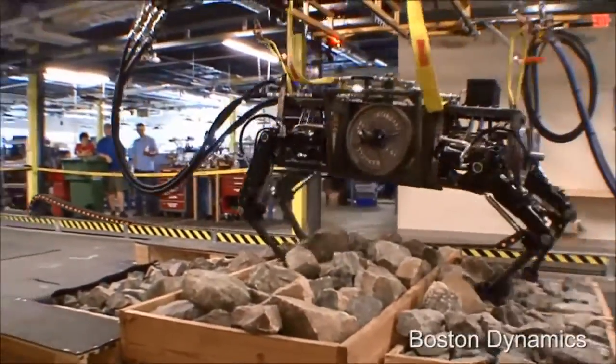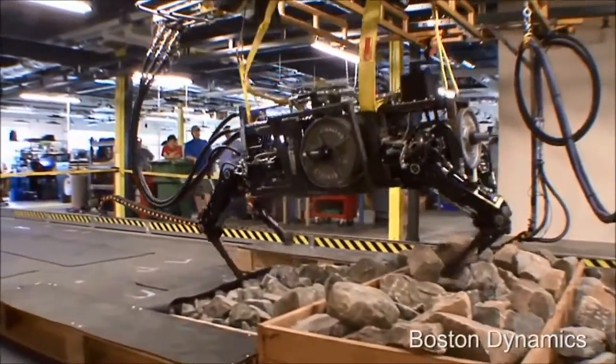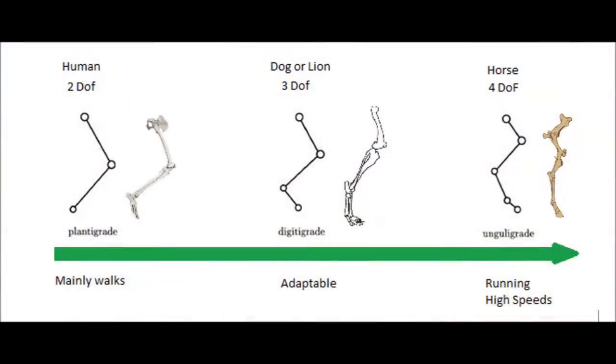The challenge is staying stable and upright. The two degrees of freedom of the plantigrade leg allows for greater stability at the expense of speed. Quadruped mammals that utilize the digitigrade and unguligrade leg structures benefit from increased efficiency at higher speeds.